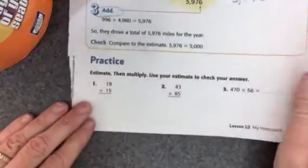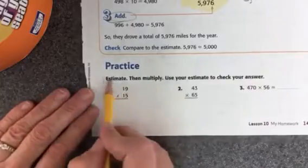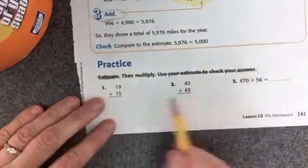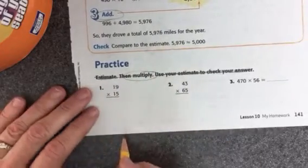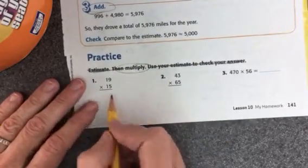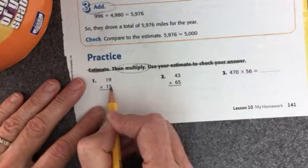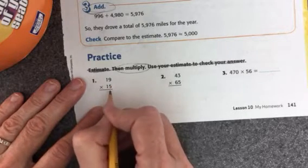Let's do this one. It says to estimate. We're not going to estimate, and we're not going to check your answer with estimation. All we're going to do is multiply. So I will do one more here with you. Let's take a look. 19 times 15. I'm going to do the ones column first. 9 times 5 is 45.